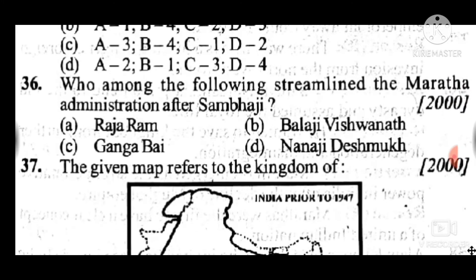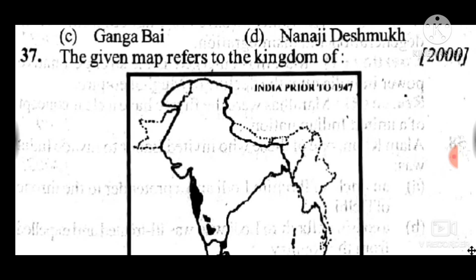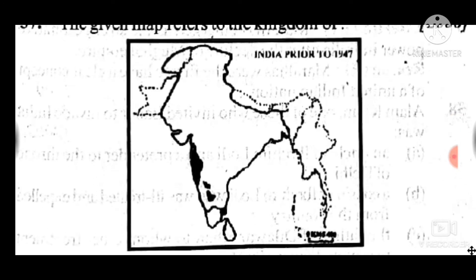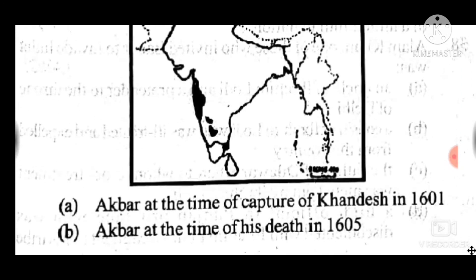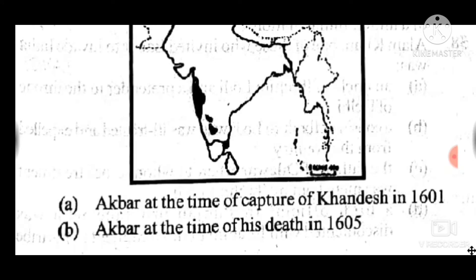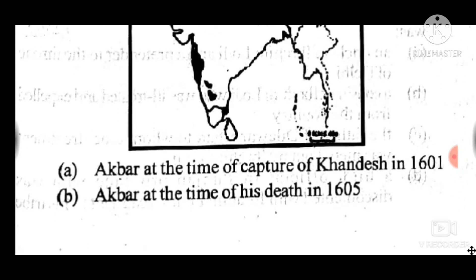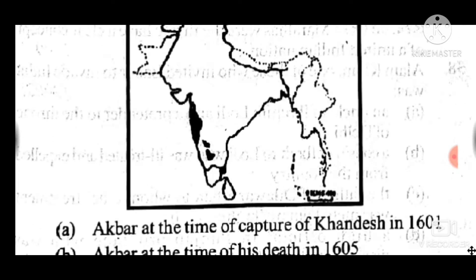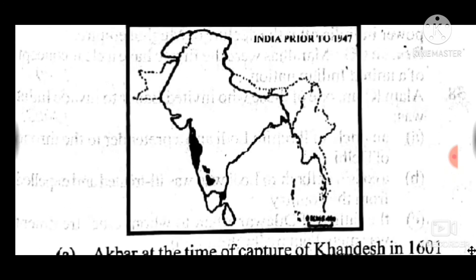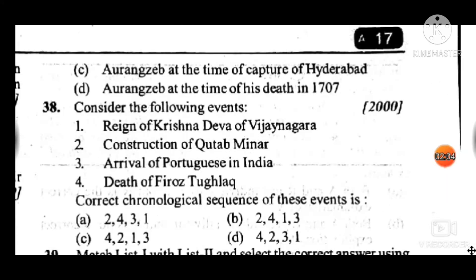Question 37 is a map-based question. Answer to question 37 is B: Akbar at the time of his death in 1604. Question 38: Consider the following events and select the correct chronological order. Answer to question 38 is A: 2-4-3-1. First, construction of Qutub Minar; then death of Ghiyasuddin Tughlaq; then arrival of Portuguese in India; and last, the reign of Krishnadeva Raya of Vijayanagara.